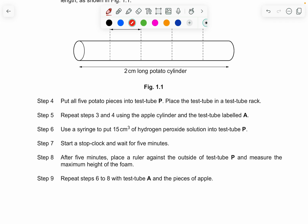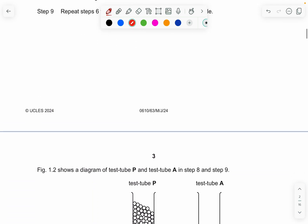And then they put all five potato pieces in the test tube and they repeat the steps three and four. Use a syringe to put 15 centimeter cube of hydrogen peroxide and start the stop clock and wait for five minutes. And after five minutes, place a roller against the outside of the test tube and measure the maximum height of the foam.